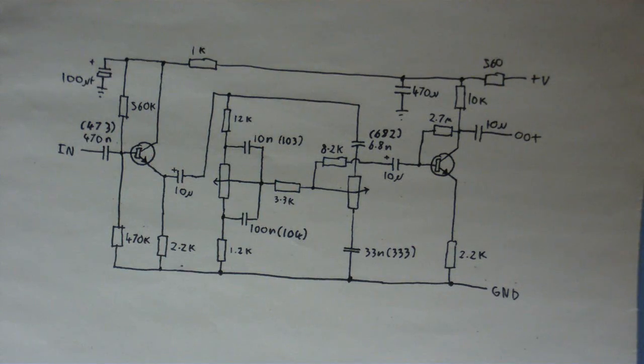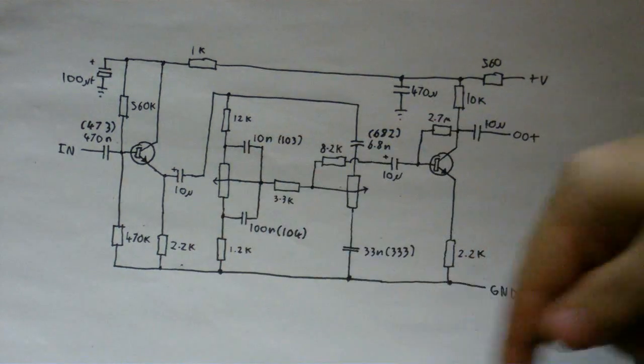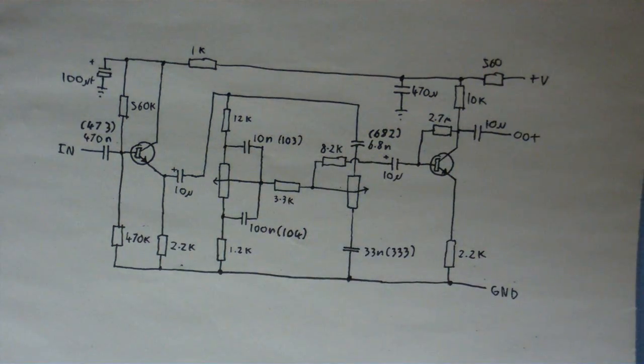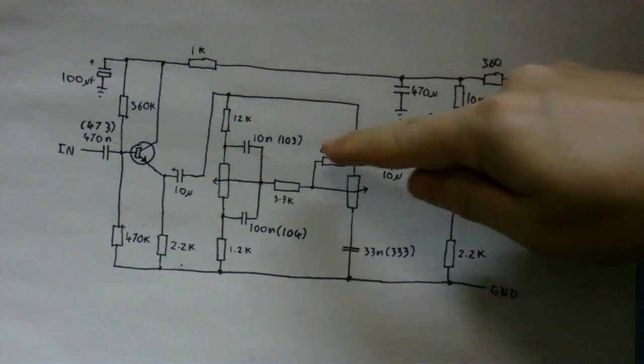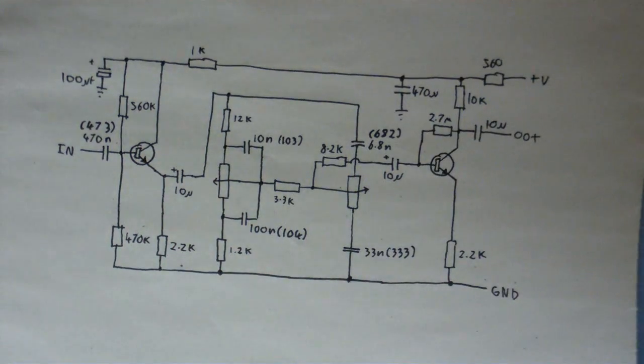This is the schematic of the tone control I'm going to build. Obviously I'm going to build two of these because I want stereo. I got all of the parts to build this tone control from Bowwood Electronics and I would really recommend that to anybody who's trying to find components. They're not overpriced like Maplin. Also to help me out on the capacitors, because they're never written as 10 nanofarad or 100 picofarad or whatever, I've put the little numbers that are going to be on the capacitors next to each one so I can find them nice and easily.